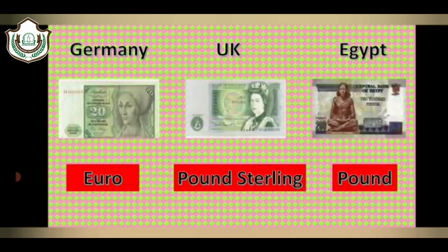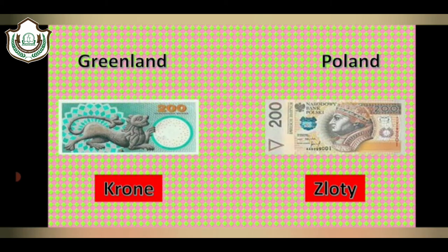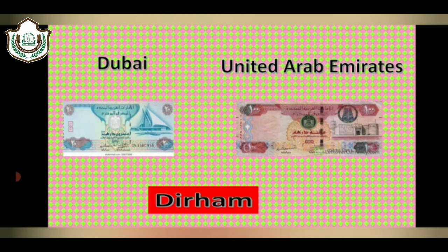Euro is the currency of Germany. Pound Sterling is the currency of the UK. Pound is the currency of Egypt. Lira is the currency of Italy. Swiss Franc is the currency of Switzerland. Afghan Afghani is the currency of Afghanistan. Ruble is the currency of Russia. Yen is the currency of Japan. Riyal is the currency of Saudi Arabia. Taka is the currency of Bangladesh. Riyal is the currency of Iran. Baht is the currency of Thailand. Krone is the currency of Greenland. Złoty is the currency of Poland. Dubai and UAE have the same currency and their currency name is Dirham.